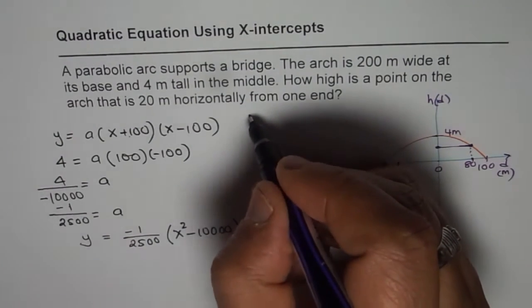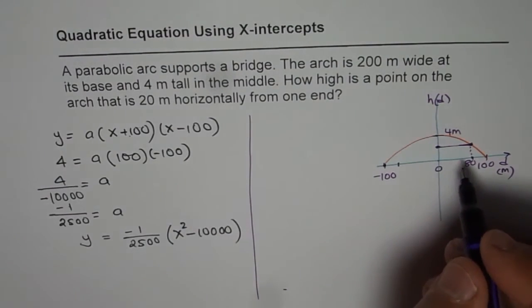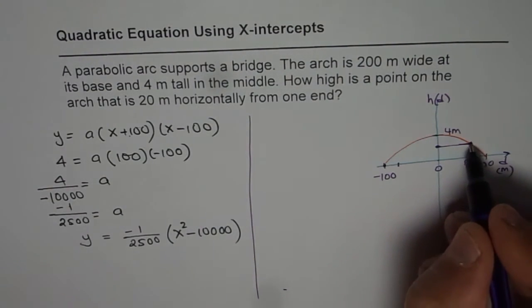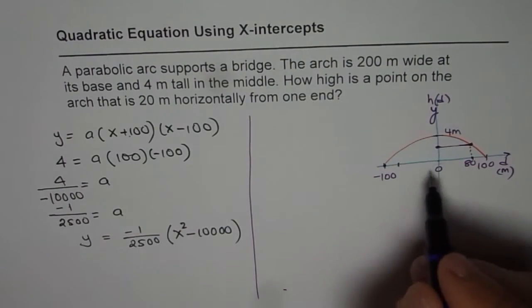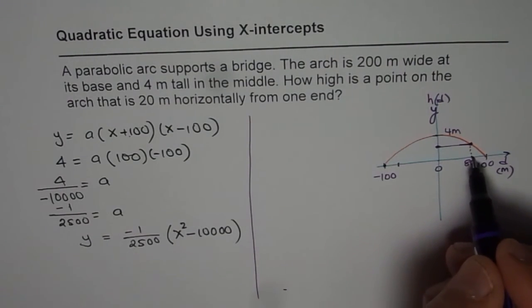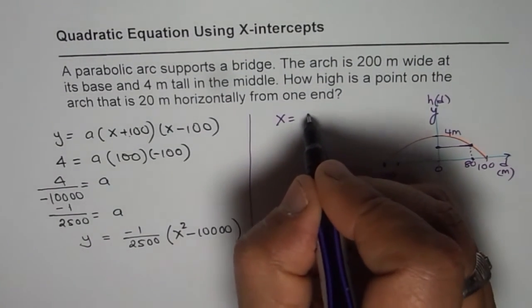Now, once we know the equation, it is kind of simpler for us. Since we need to find the height where y is the height for us, let's say y is the height at 80. So at x equals 80, we need to find the height.